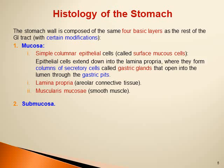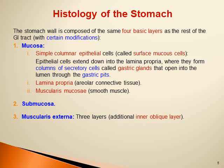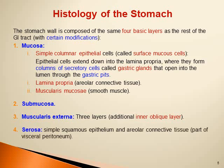The muscularis externa is composed of three layers: an inner oblique layer in addition to the circular and longitudinal smooth muscle layers. The serosa is simple squamous epithelium and areolar connective tissue, and it is part of the visceral peritoneum.